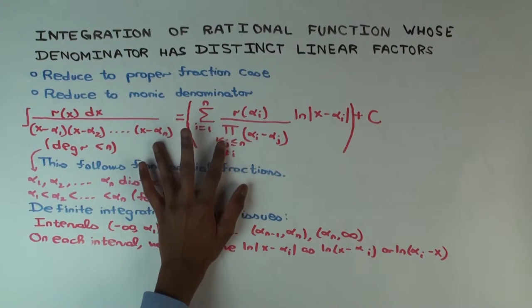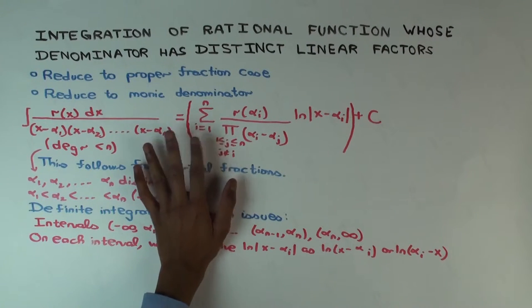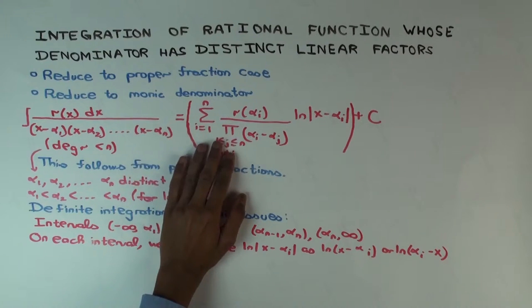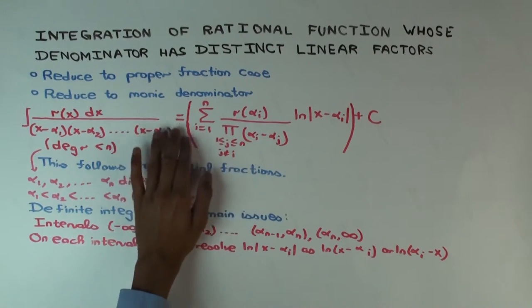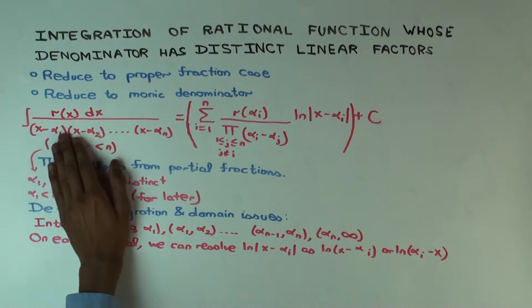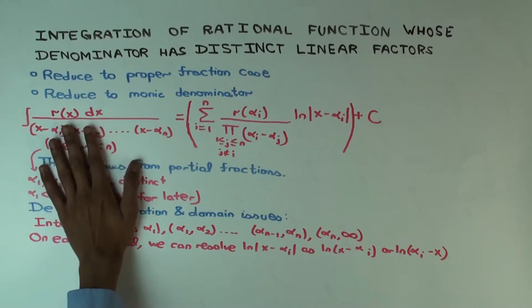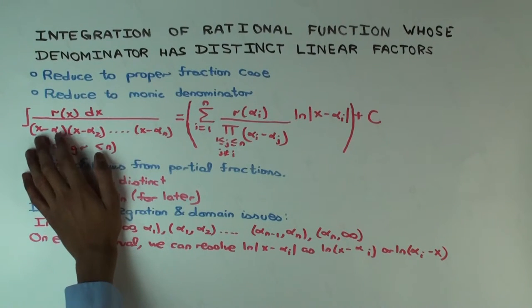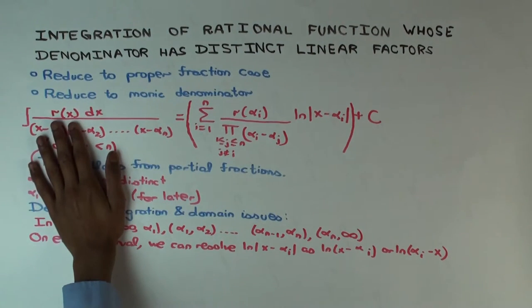However, this doesn't really capture the issue of where the function is defined, where the anti-derivative makes sense, etc. For simplicity, I'll assume that none of these (x - α_i) divides r(x).